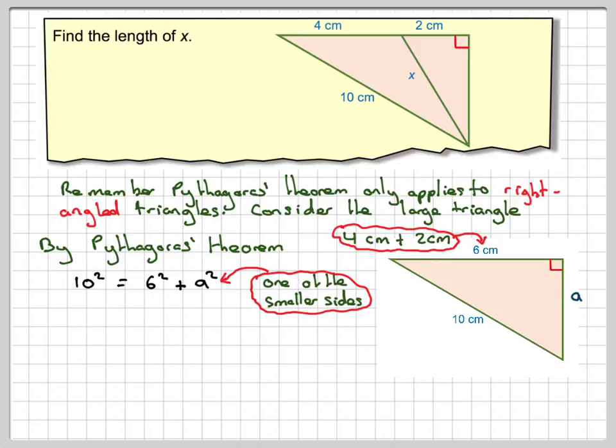So rearranging that, and you can stop the video here and have a go for yourself first if you like, A squared is going to be equal to 10 squared minus 6 squared, because we're finding one of the smaller sides here. Now, 10 squared is 100, and 6 squared is 36. 100 minus 36 is 64.